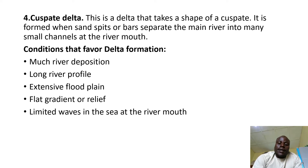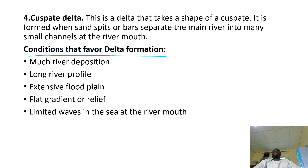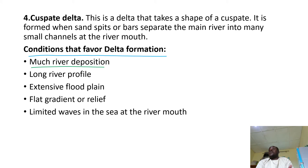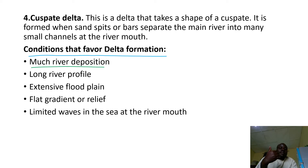You can ask yourselves: what are the conditions that favor delta formation — for all this extensive land or flat area made up of deposited river materials at the river mouth to form? What are the conditions? Factors that favor the formation of a delta, like the Niger delta, which is our best example. There must be much deposition because deposited materials are the raw materials and tools used to build the delta, so the river must carry much sediment.